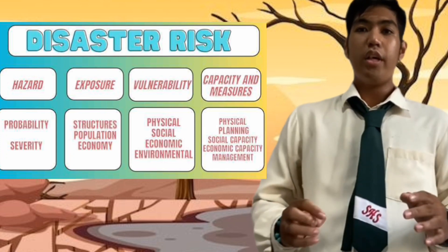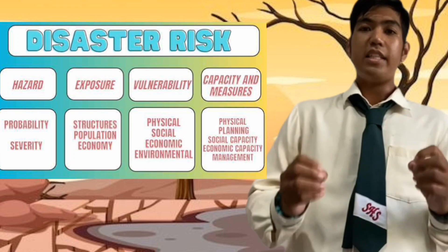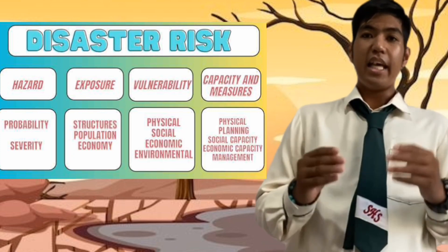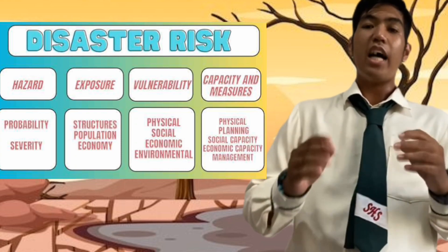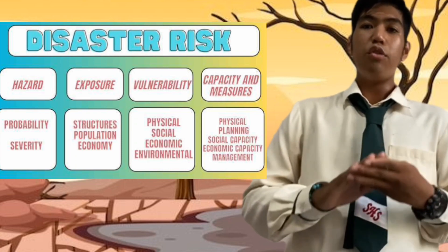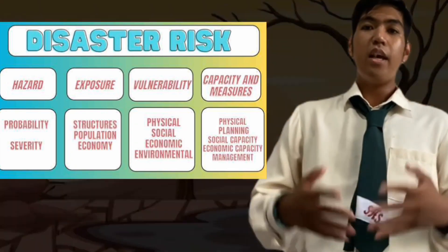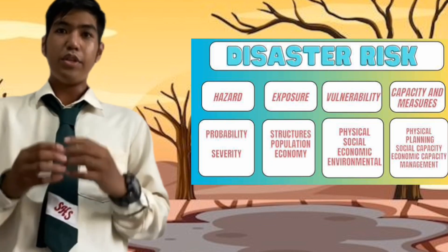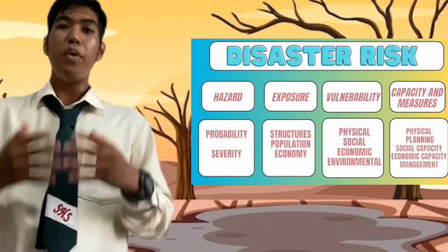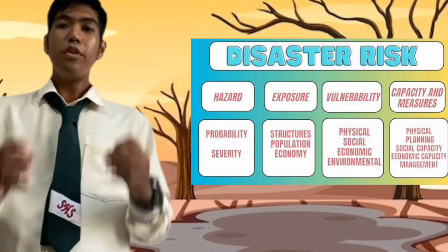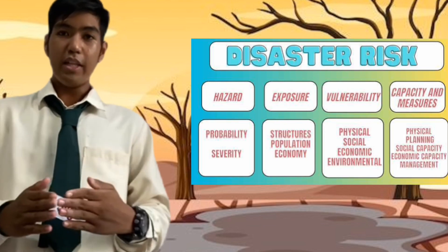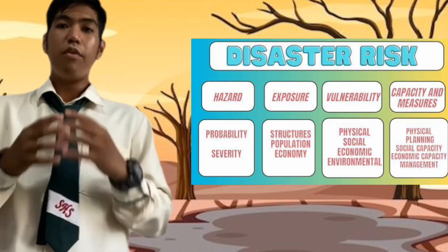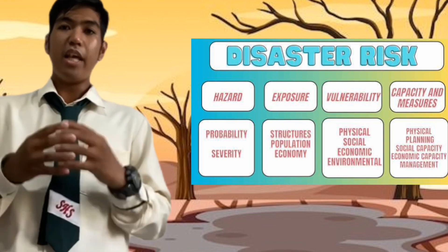Next is exposure, defined as the situation of people, infrastructure, housing, production capacities, and other tangible human assets located in hazard-prone areas, which include structures, buildings, and establishments. Vulnerability is the inability to resist a hazard or to respond when a disaster has occurred. Under vulnerability are physical vulnerability, social vulnerability, economic vulnerability, and environmental vulnerability.